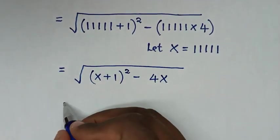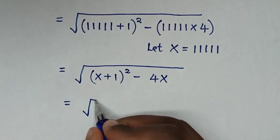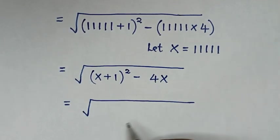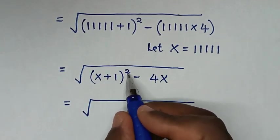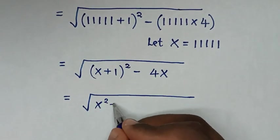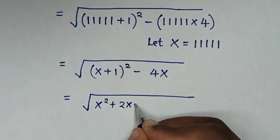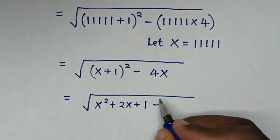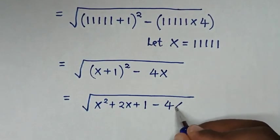Then in the next step, it will be equal to square root of (x plus 1) squared. When we expand this, it will be x squared plus 2x plus 1, then minus 4x.